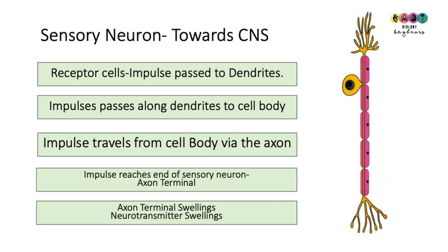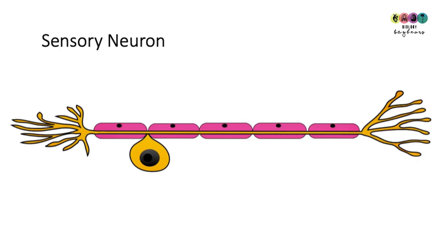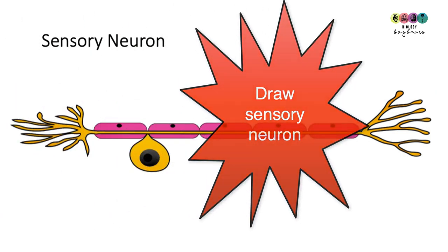The ends of the sensory neuron end in swellings known as axon terminal swellings, otherwise called neurotransmitter swellings. The best way of tackling this is to draw a sensory neuron, label it, and tell the story of what happens as you label it.